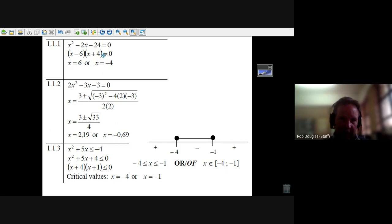and minus 6 plus 4, when you do the foil thing outside and inside, you get minus 2x. So there's your factoring: x is 6 or minus 4. Now here, the quadratic formula, a is 2, b is minus 3, c is minus 3, and there it is: negative b plus or minus